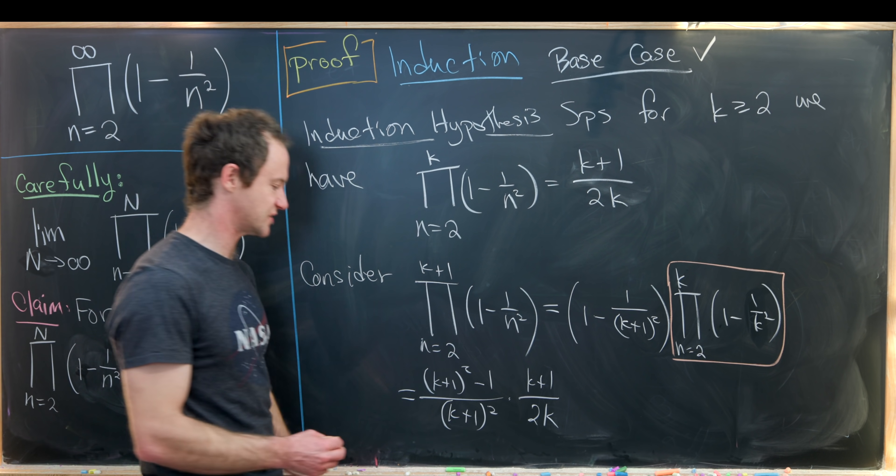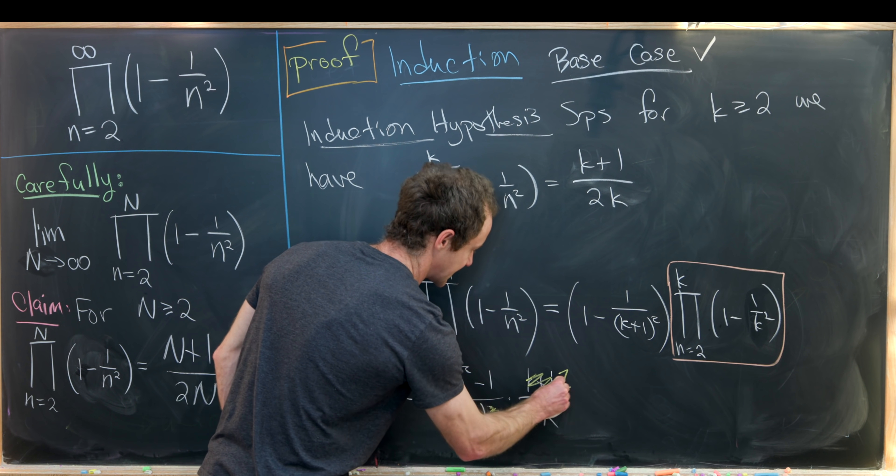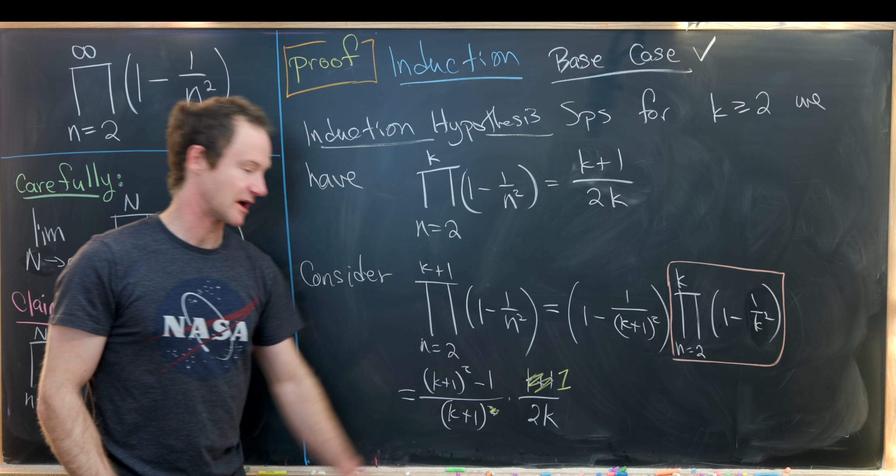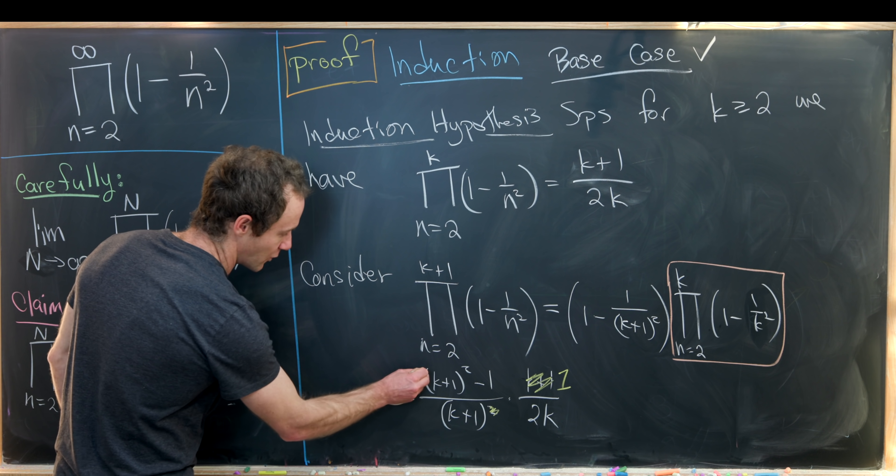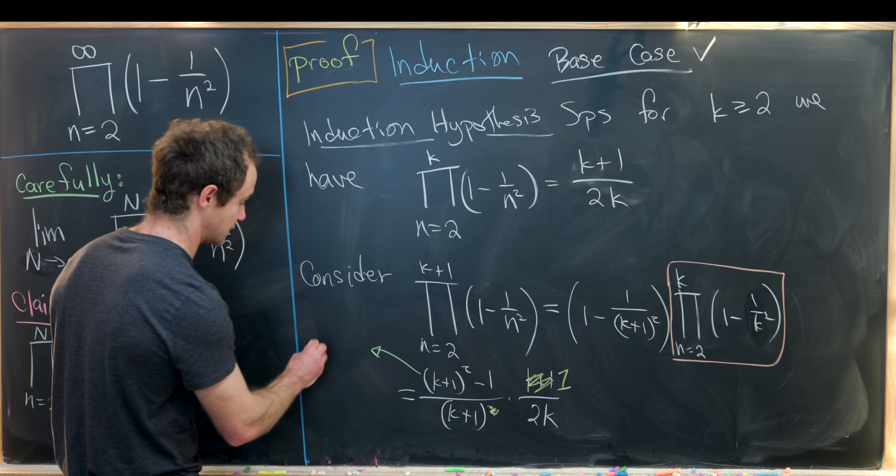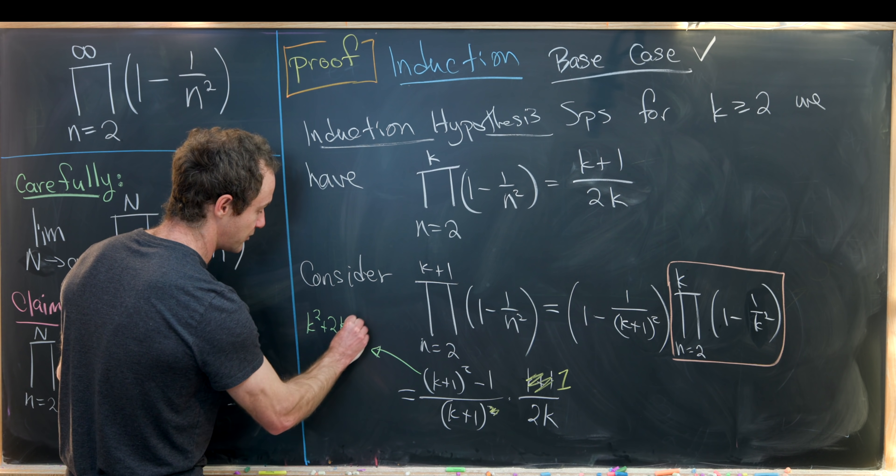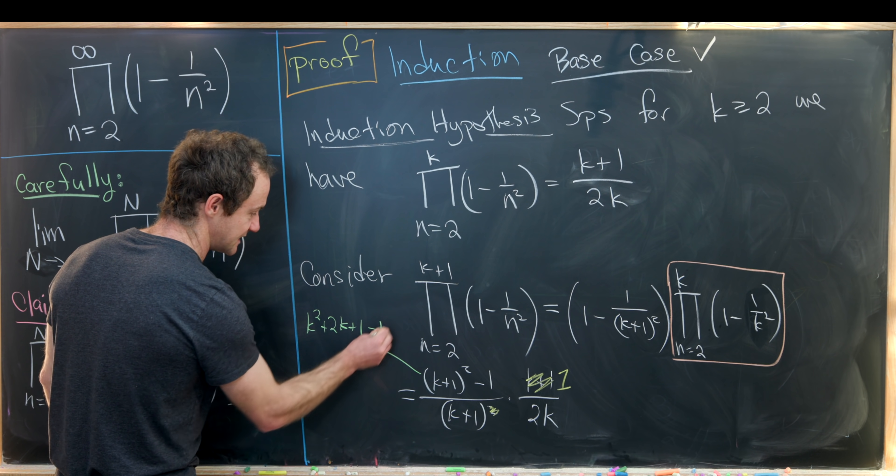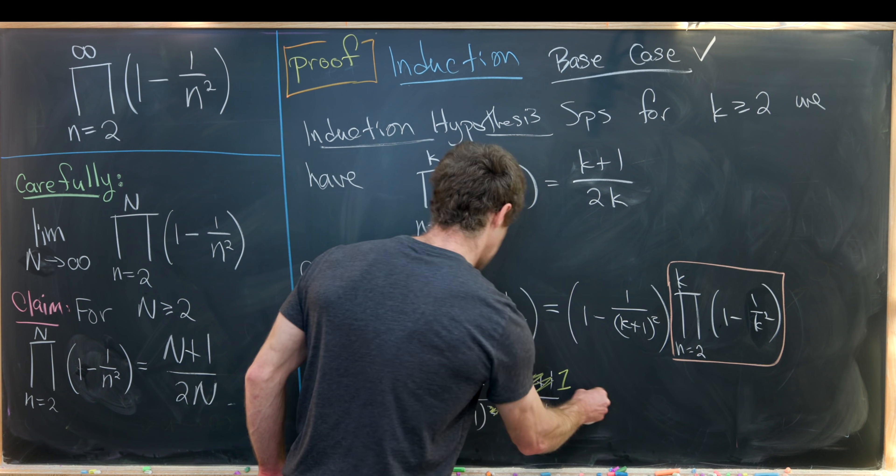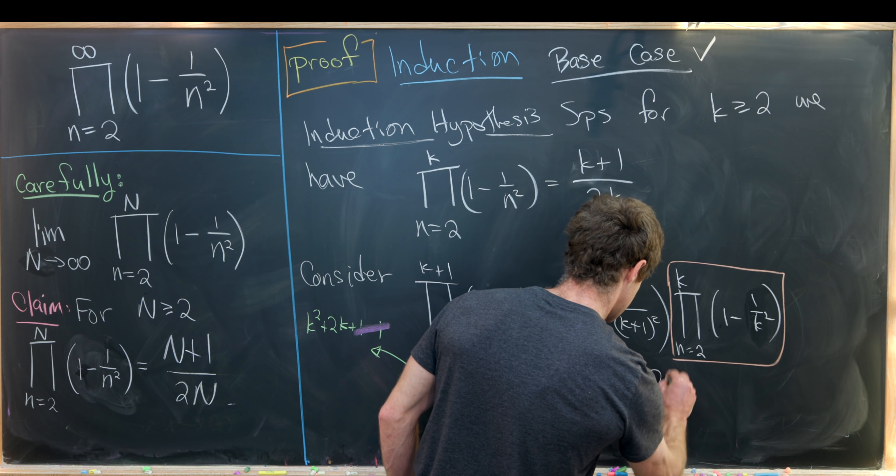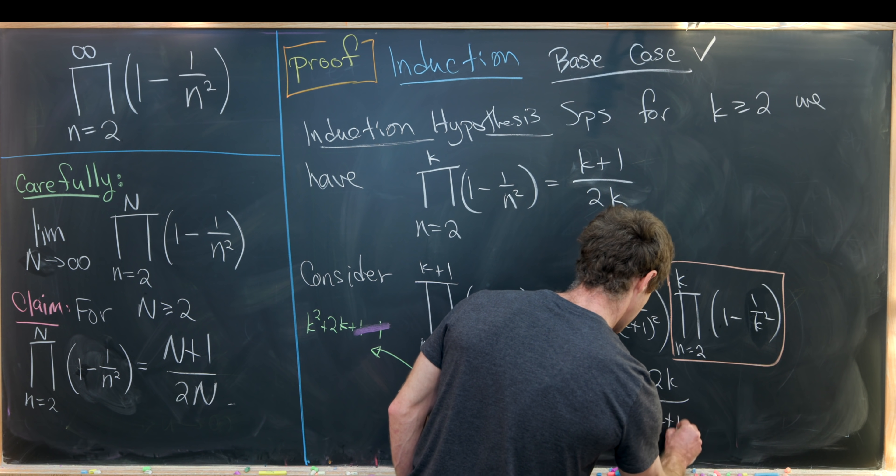Okay, so let's see some simplification that occurs. This k plus 1 squared will cancel down to a k plus 1 to the first power by canceling out this k plus 1 that's in the numerator of the last term. And then furthermore, we can take this k plus 1 squared minus 1 and rewrite it as k squared plus 2k plus 1 minus 1. And we'll see that the plus 1 and the minus 1 cancel.